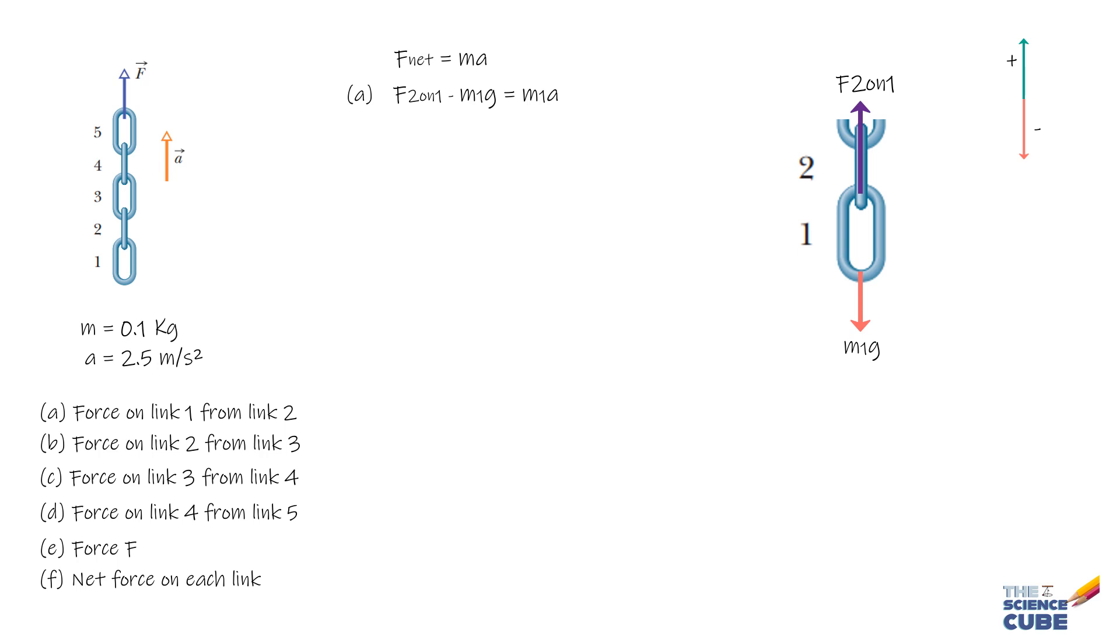F2 on 1 equals M1 times (A plus G), or F2 on 1 equals 0.1 times (2.5 plus 9.8), that equals 1.23 Newtons. The force of link 2 on link 1 is 1.23 Newtons.